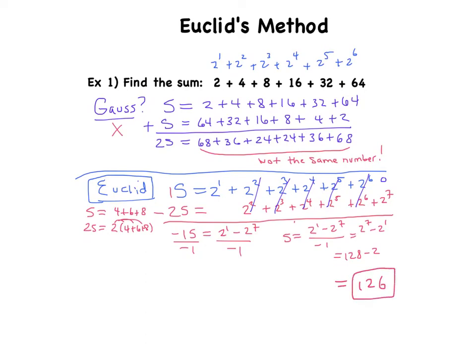A couple things to recognize in this example: first is that Gauss's method doesn't work for this type of problem, but we do have a new method provided by Euclid which will work. You will need to make sure you express the terms as powers of one number if they're not expressed like that already. Try the next slide on your own.